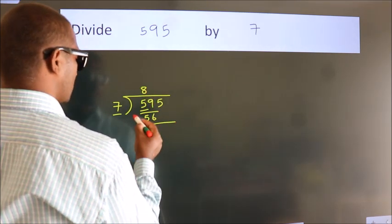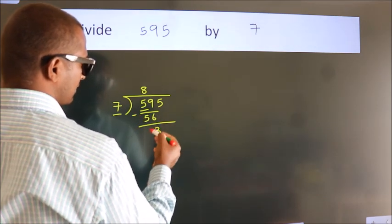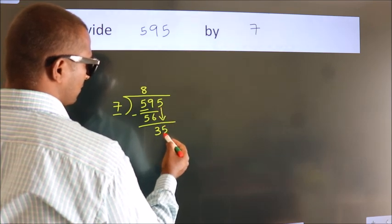Now we should subtract. We get 3. After this, bring down the beside number. So 5 down, giving us 35.